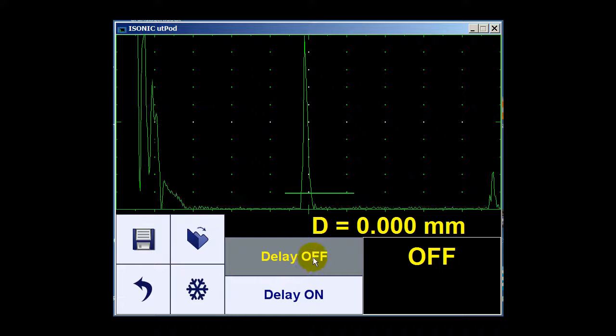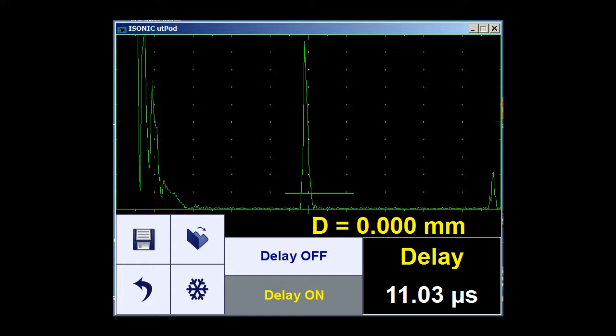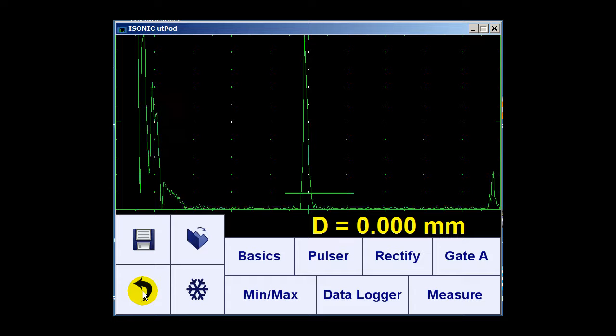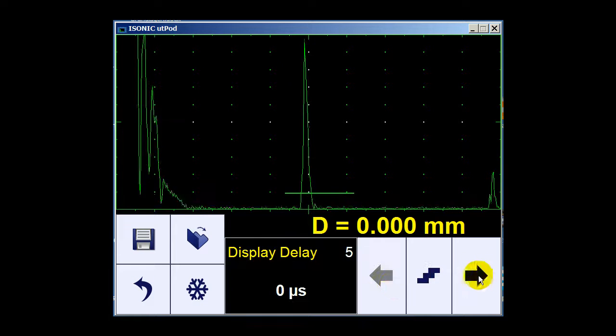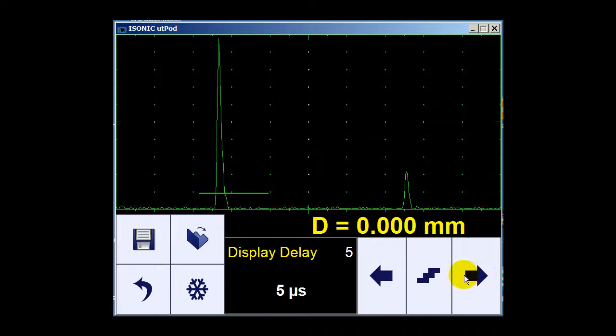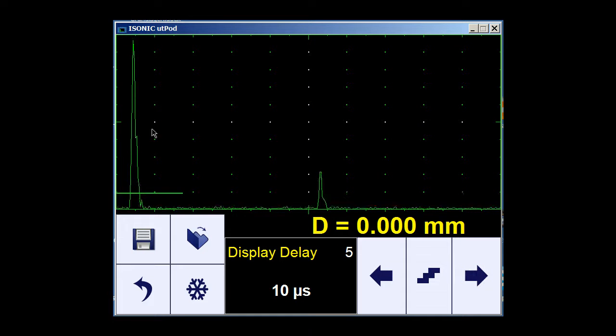After switching from delay line off to on, it measures the delay line at 11.03 microseconds. Now, in order to ease the calibration, I make sure that I move the delay line indication to the left of the screen.